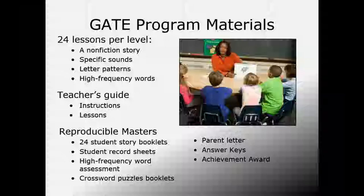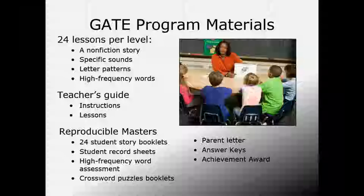The reproducible masters are at the beginning of your teacher's sample handout. Pages have a dotted line down the middle where you fold the lesson in half—print it front to back and you have four sides. Each booklet includes 24 student story booklets and student record sheets with 12 bars per graph; printed back to back, one sheet takes a student through all 24 lessons of the level. There's also a high-frequency word assessment, crossword puzzles, a parent letter, answer keys, and an achievement award.